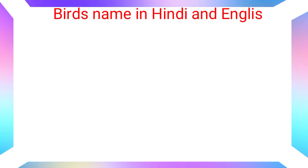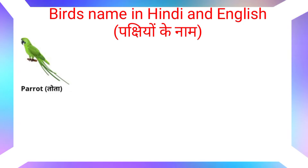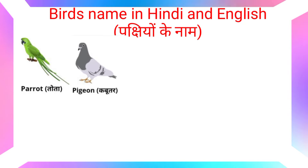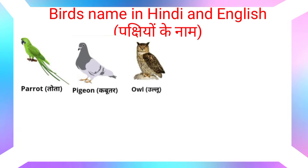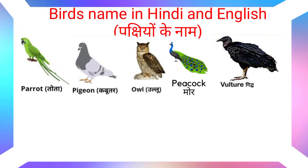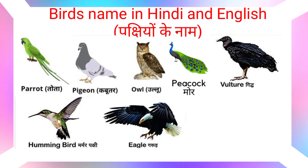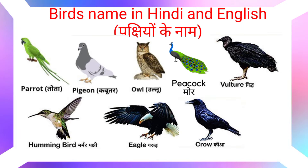Bird names in Hindi and English. Parrot means Tota. Pigeon means Kabootar. Owl means Zullu. Peacock means Moor. Vulture means Giddh. Hummingbird means Murmur Pakshi. Eagle means Garud. Crow...